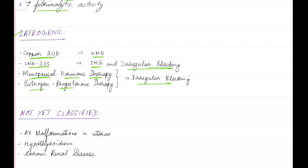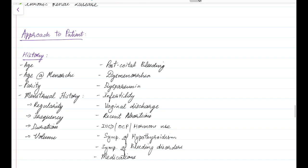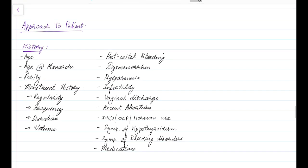In the same way, estrogen-progesterone therapy given for many disorders can also cause irregular bleeding. Some other conditions that are not yet classified include AV malformations in the uterus, hypothyroidism, and chronic renal disease.